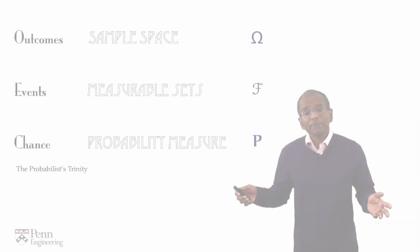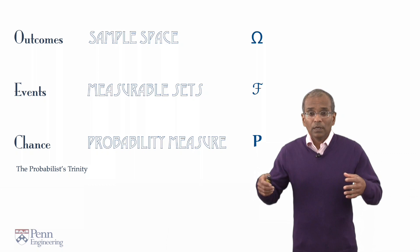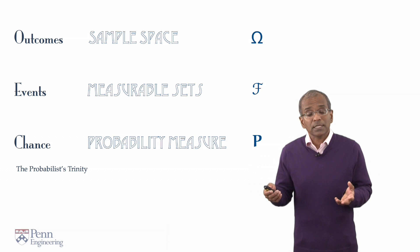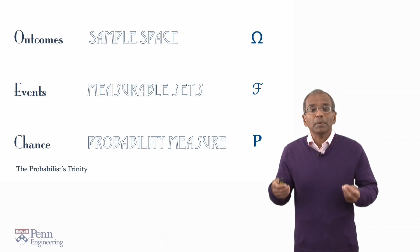We have now built up two of the formal elements needed for the theory. We have an underlying abstract sample space and a collection of subsets of the sample space that we will call events or measurable sets. To complete the picture, we now need the idea of a probability measure.